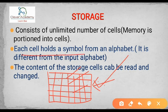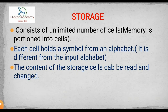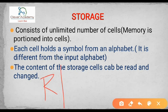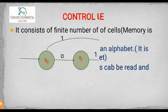Each cell holds a symbol from an alphabet. Whatever data or particular cell you are representing, you can read it and you can perform the write operation. I can read one string and after completion I can replace that string — that you can call it as a write operation. That is how we identify data and perform operations in the storage.